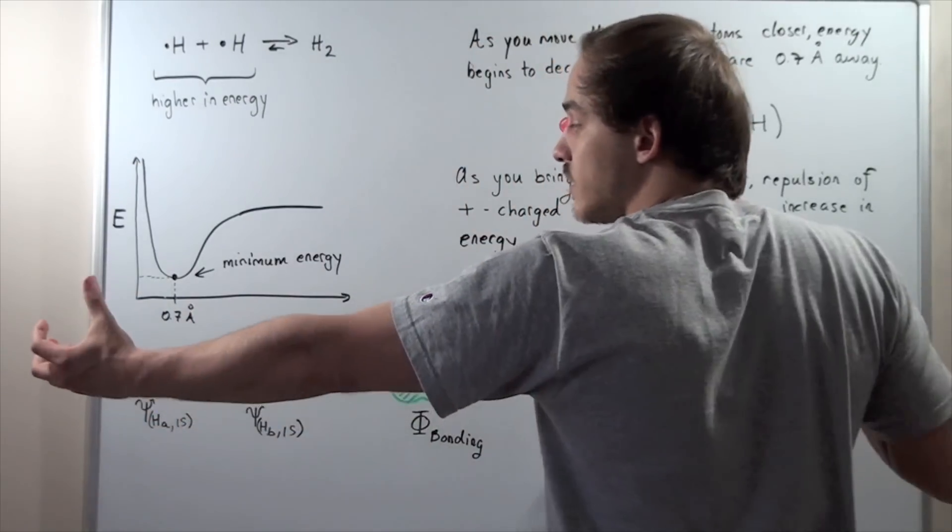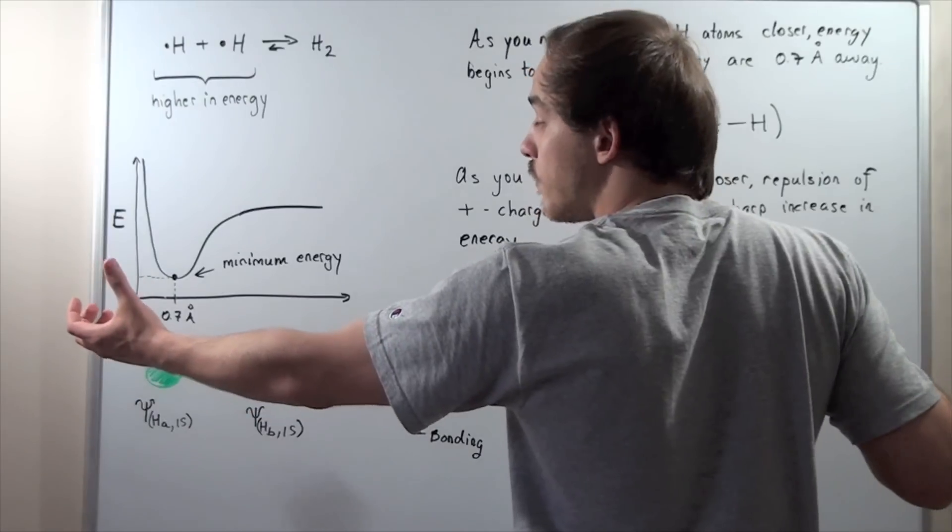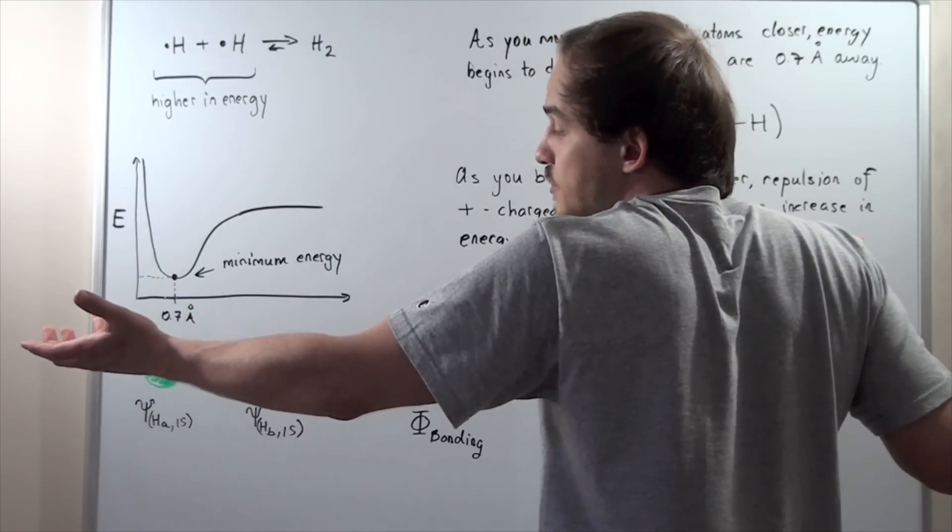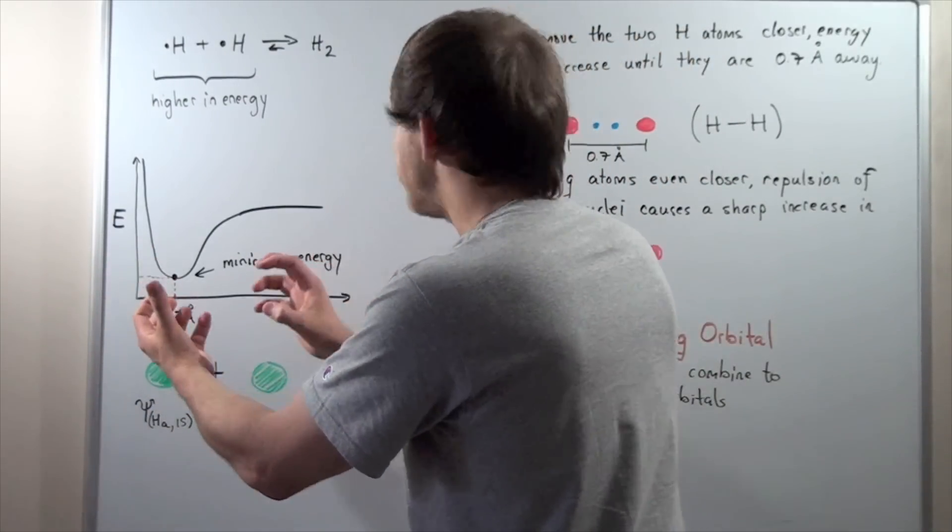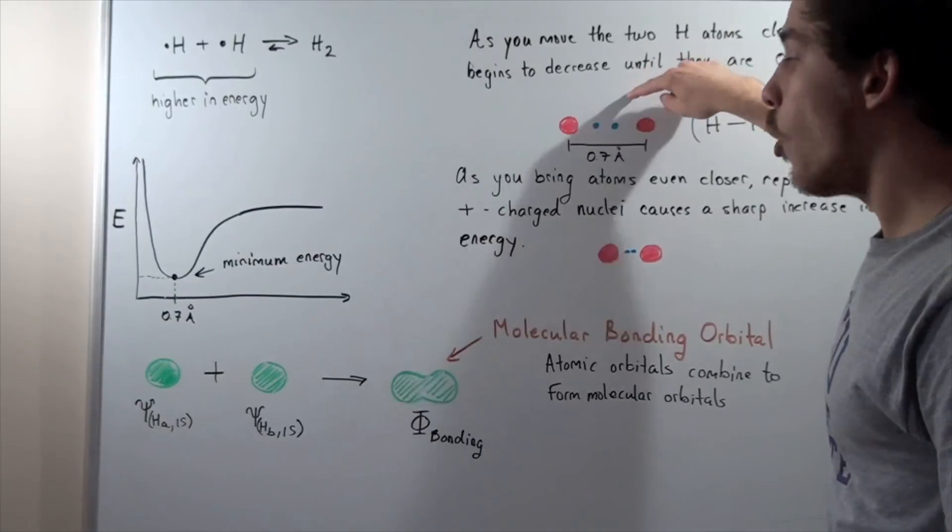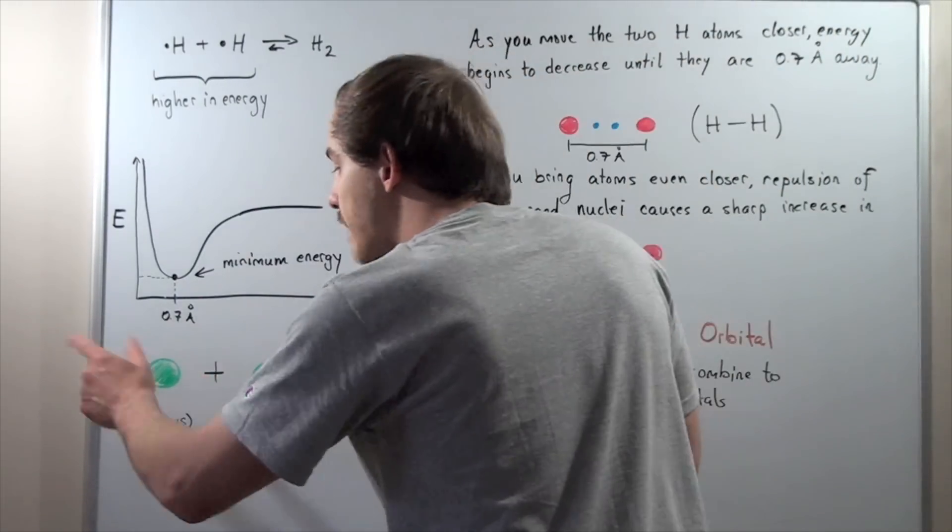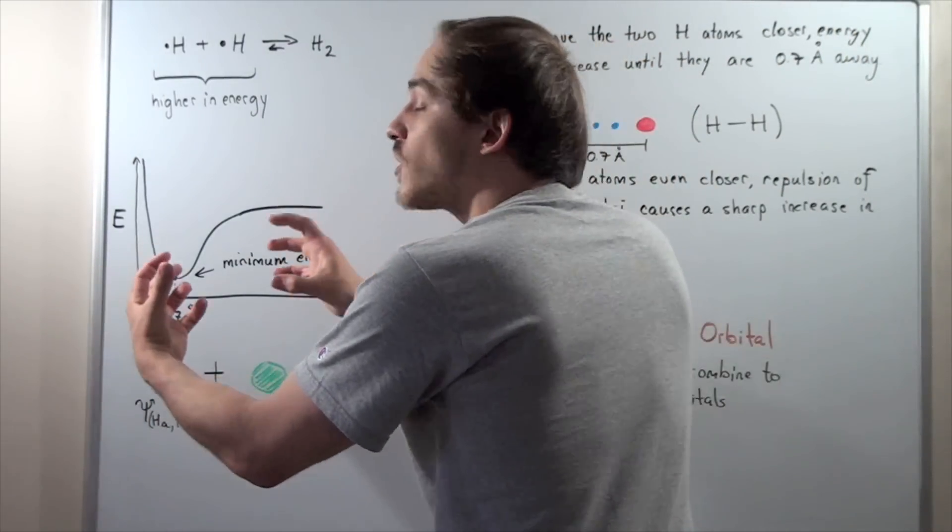When these orbitals, atomic orbitals, are very far apart, nothing really happens. But, as I move them closer and closer, eventually, when I get to this point, these atomic orbitals will overlap.